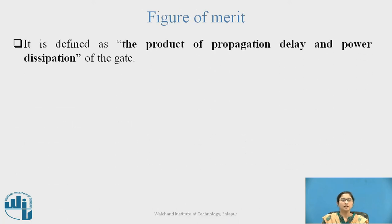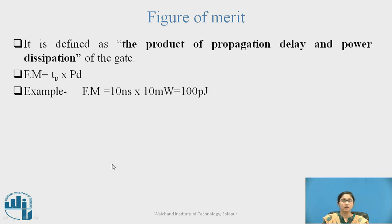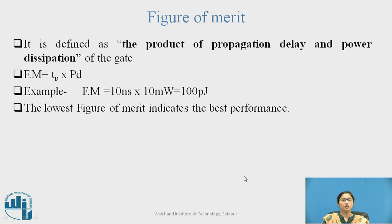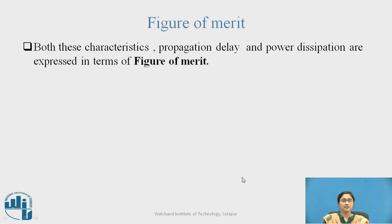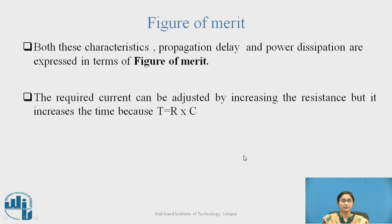Figure of merit. It is defined as the product of propagation delay and power dissipation of the gate. For example, Fm = 10 nanoseconds × 10 mW = 100 picojoules. The lowest figure of merit indicates the best performance. Both propagation delay and power dissipation are expressed together in terms of figure of merit.